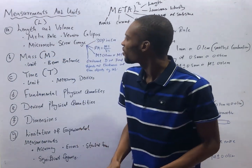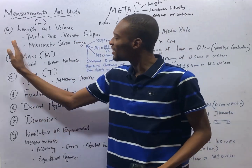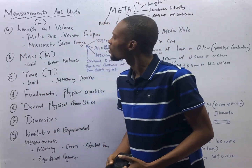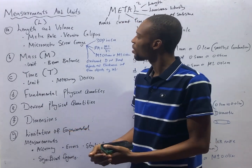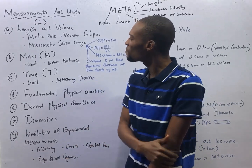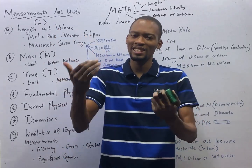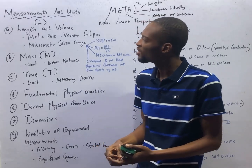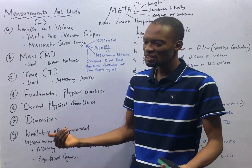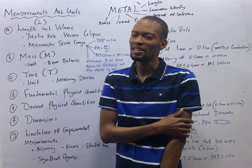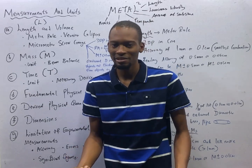How do we measure the three main fundamental quantities — length, mass, and time? To measure length, you use the meter rule, the vernier caliper, or the micrometer screw gauge. Volume is length times length times length, and you can measure volume using a measuring cylinder. The units of volume are centimeter cubed, millimeter cubed, or meter cubed, depending on the unit you are dealing with.